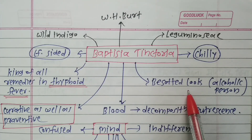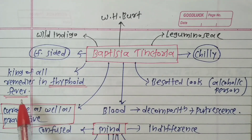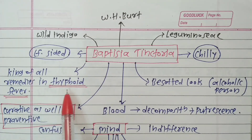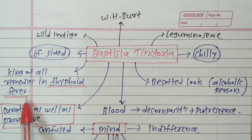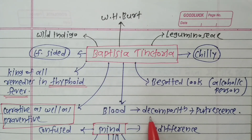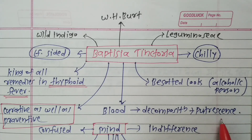Baptisia is the king of all remedies in typhoid fever. It is both curative as well as preventive. It acts on the blood, causes decomposition, and produces putrid or septic hemorrhage.